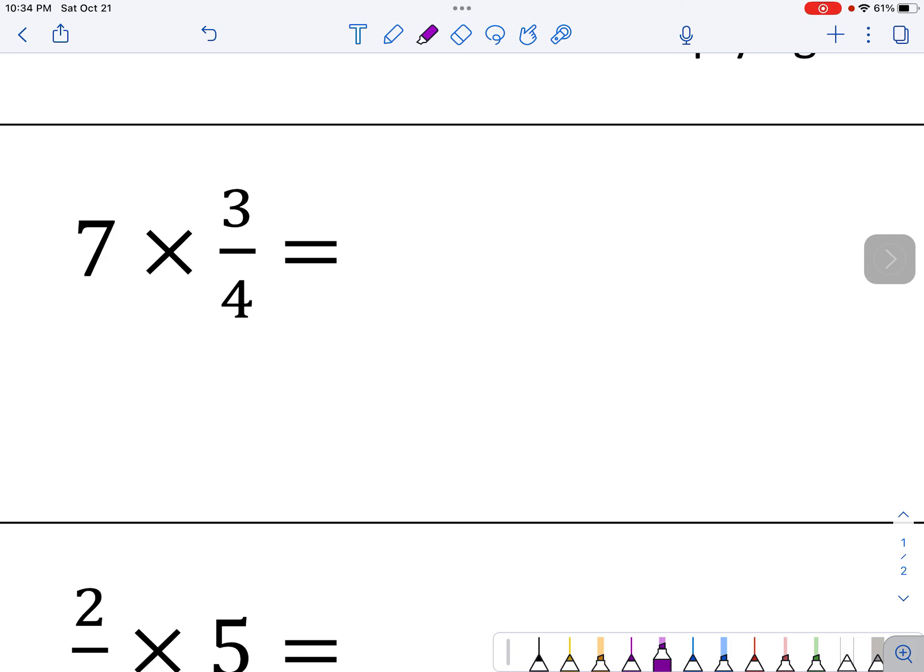Way back in our first lesson, we learned that you could take the whole number times the numerator, so that's 7 times 3, and then we kept the denominator, and that would be 21 on top of 4, right?